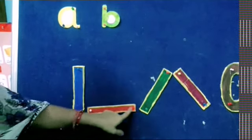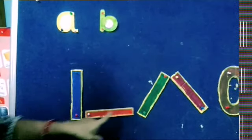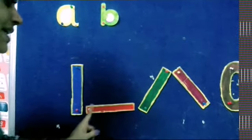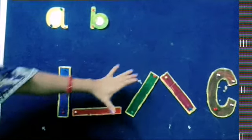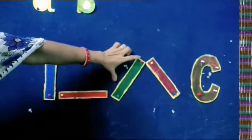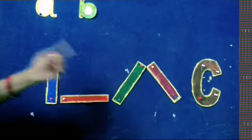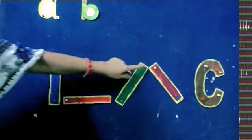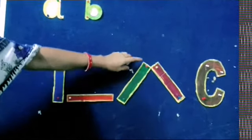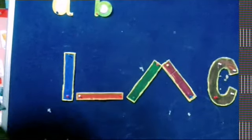Next, what is this line? Left to right, sleeping line. Everybody repeat. Left to right, sleeping line. Next, what is this line? Right to left slanting line. Everybody say: right to left, left slanting line. All of you say: right to left, left slanting line.